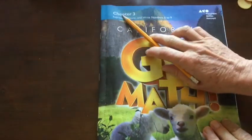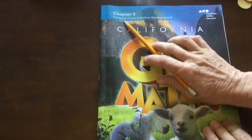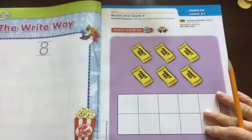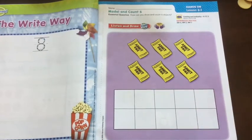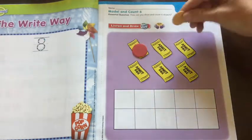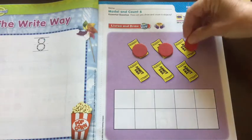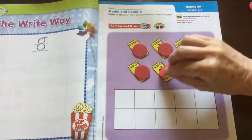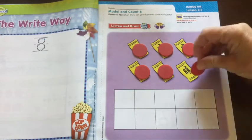It says Chapter 3 at the top: Represent, count, and write numbers 6 to 9. So let's look at this one. The directions read, place a counter on each ticket in the set as you count them. So let's put our counters on. 1, 2, 3, 4, 5, 6.